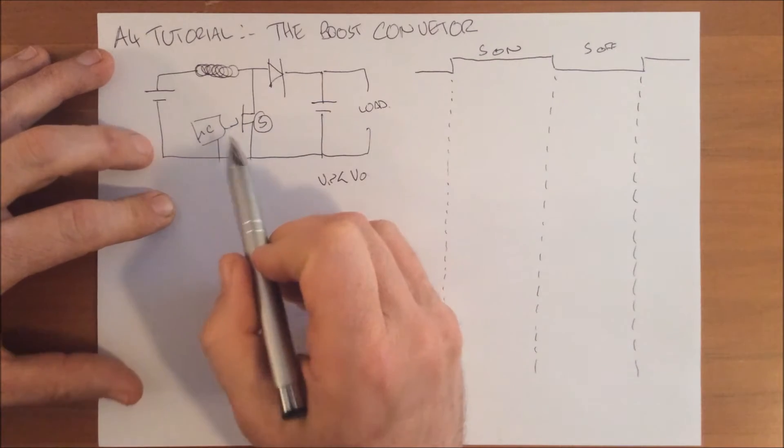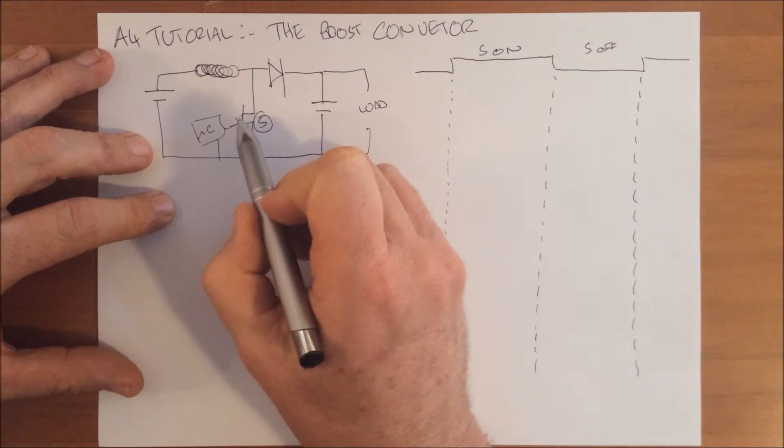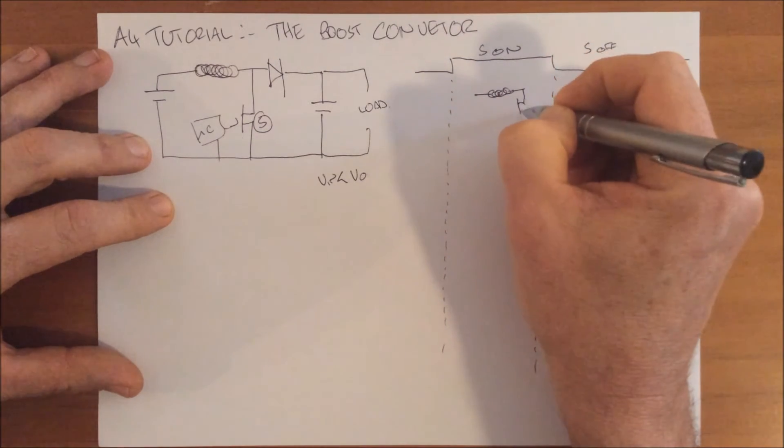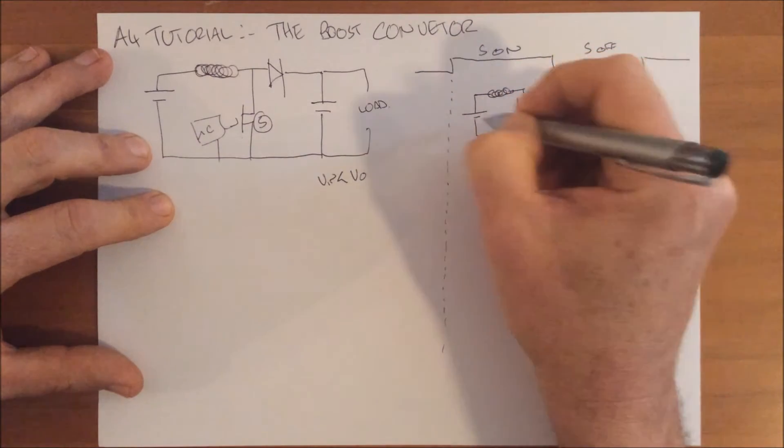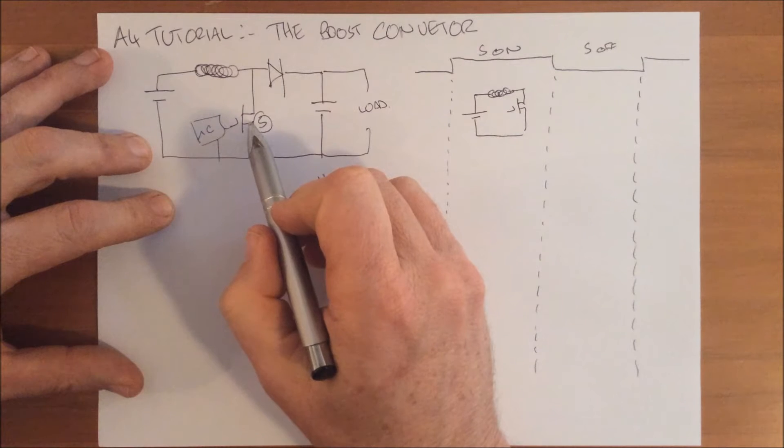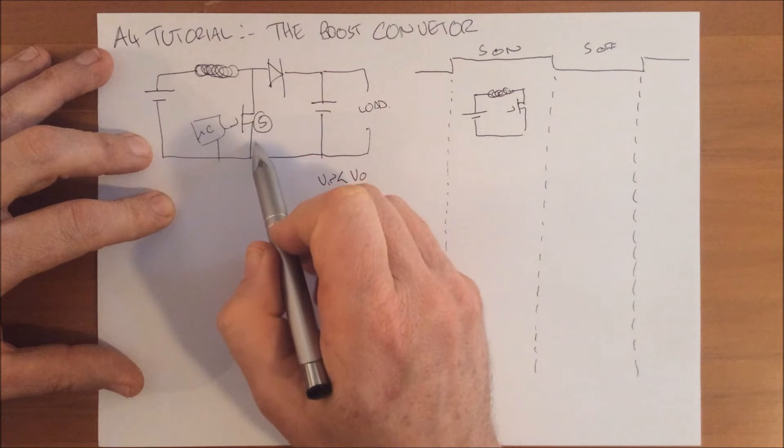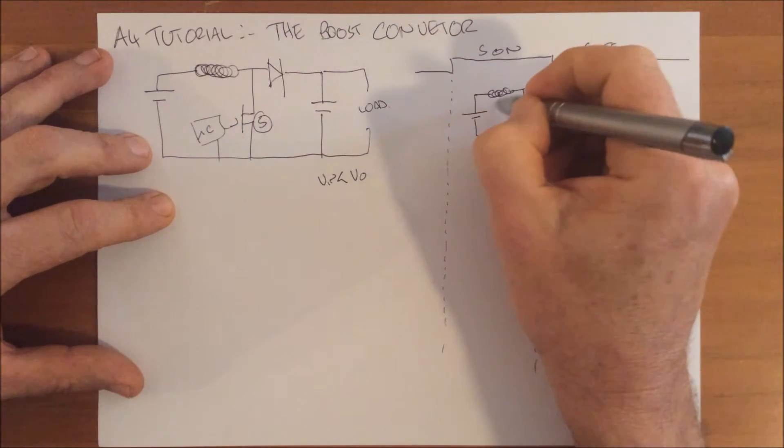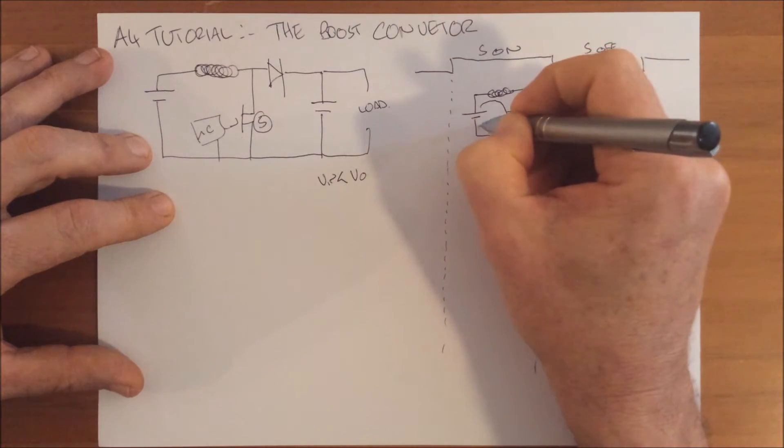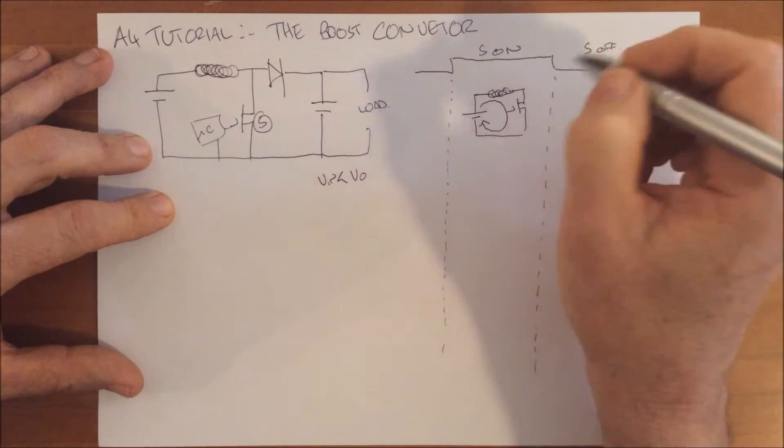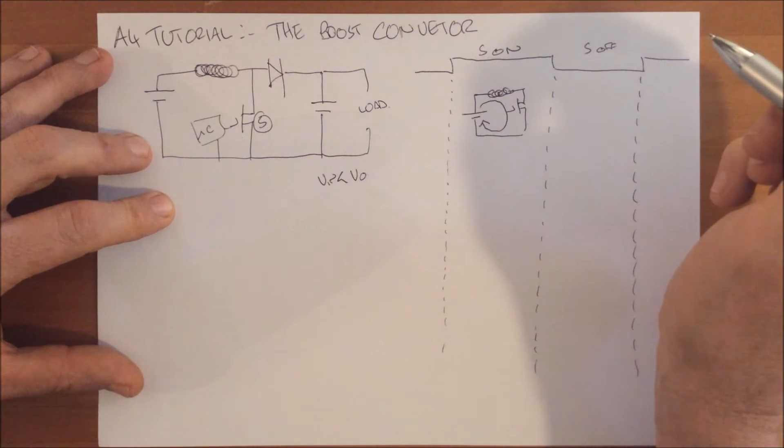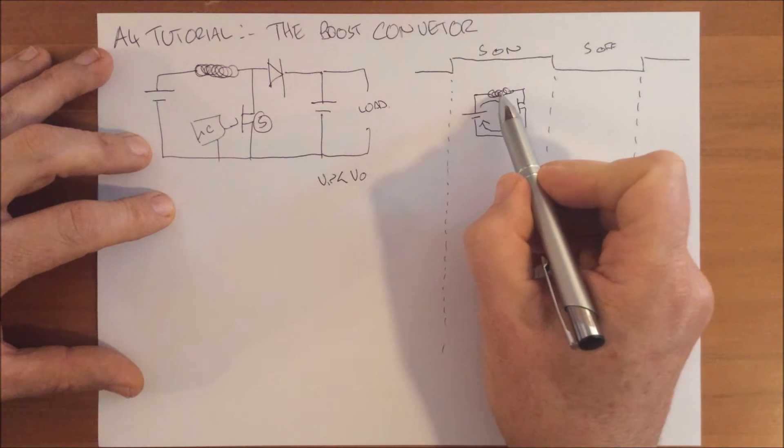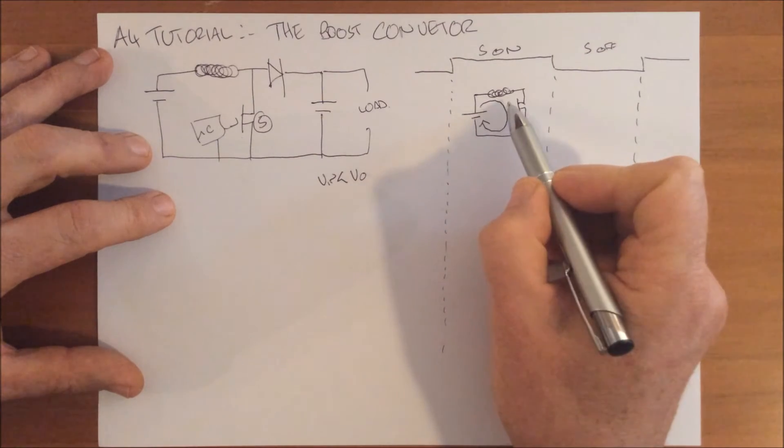In the on condition when switch one is on, the circuit is extremely simple. This MOSFET short circuits all of this, and our circuit effectively becomes our inductor, our MOSFET, and our DC supply. When the switch is on, we have a very low impedance path which shorts all this out and renders it useless. We have current flow out of our battery, and the energy from our supply is being used to charge our inductor.